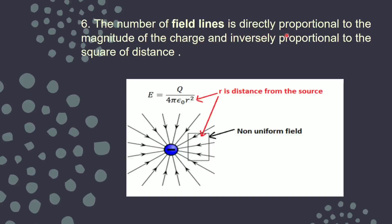Next property says the number of field lines is directly proportional to the magnitude of the charge and inversely proportional to the square of the distance — the formula for electric field due to a point charge derived in the previous class. If the charge is more the field will be more strong; if you go apart from the source charge it is inversely proportional to the square of the distance. To find the electric field at a particular point, put the test charge there at distance r from the source charge — the test charge has to be negligibly small.